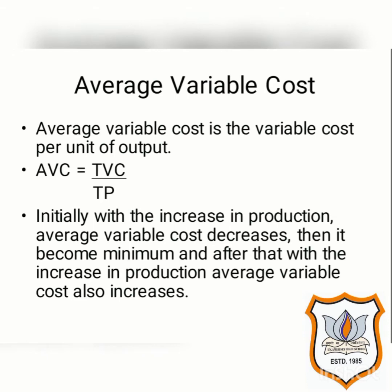Talking about average variable cost — just like average fixed cost, average variable cost is also the variable cost per unit of output. That means, in order to produce one unit, how much variable cost has been incurred is known as average variable cost. The formula is: AVC equals TVC upon TP, that means average variable cost equals total variable cost divided by total production. When we divide total variable cost by total units produced, we get average variable cost.